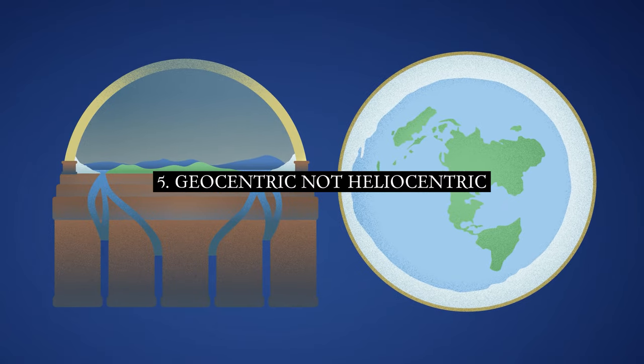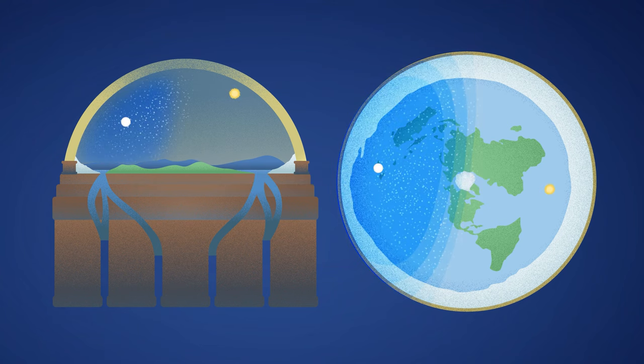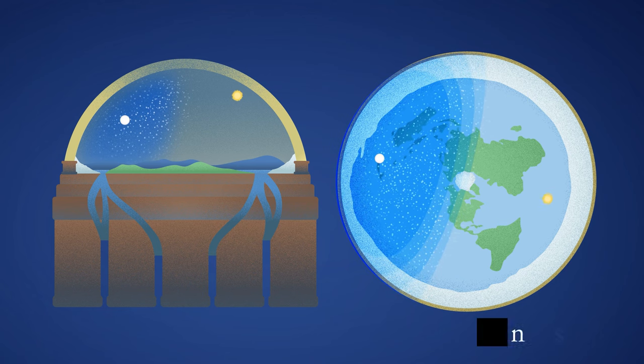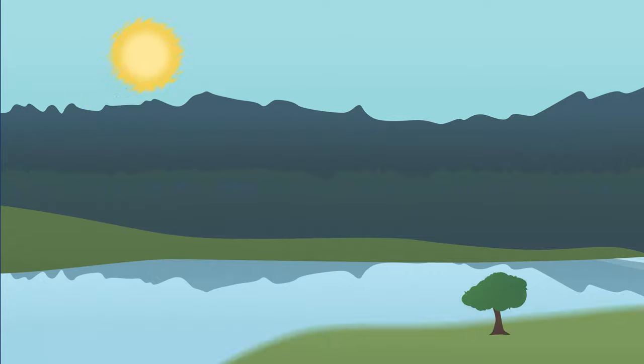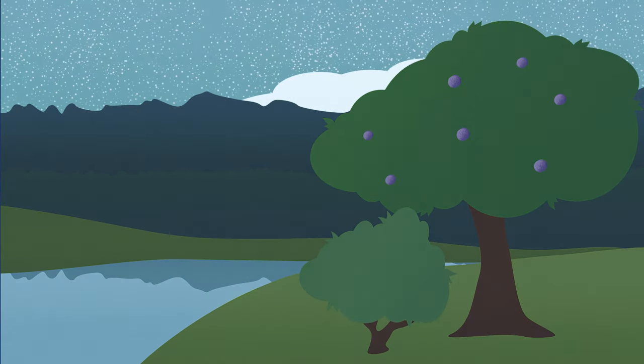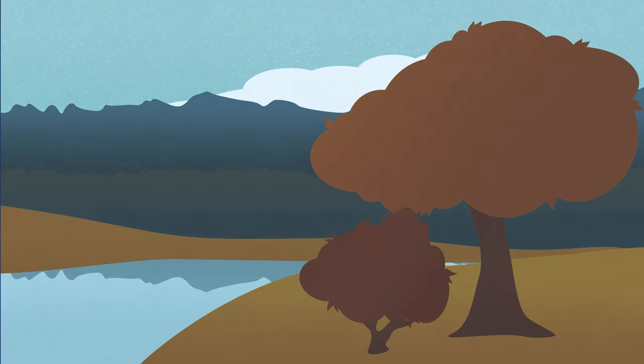5. Geocentric, not heliocentric. According to Scripture, the sun, moon, and stars are not millions of miles away, but are simply lights in the firmament of the heaven. Far from being a cluster of space rocks and burning gases roving in their own courses, the Bible teaches that these mysterious luminaries were made for the sole service of the earth, to give light upon the earth.